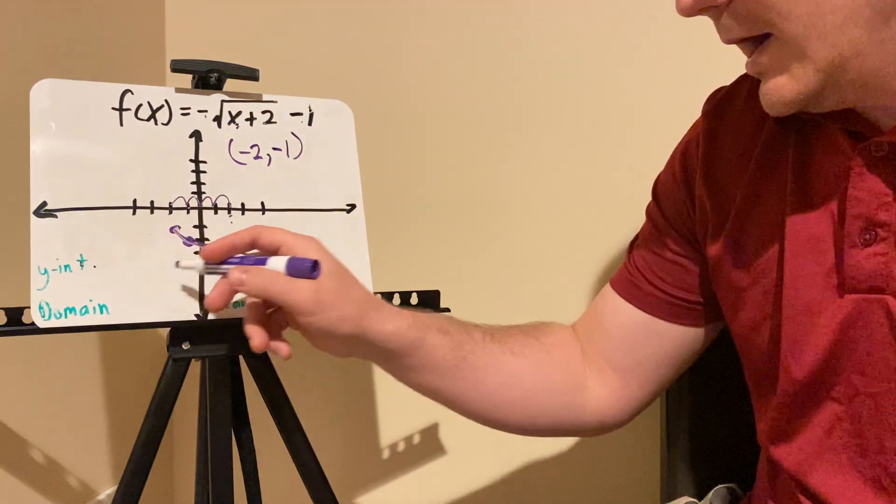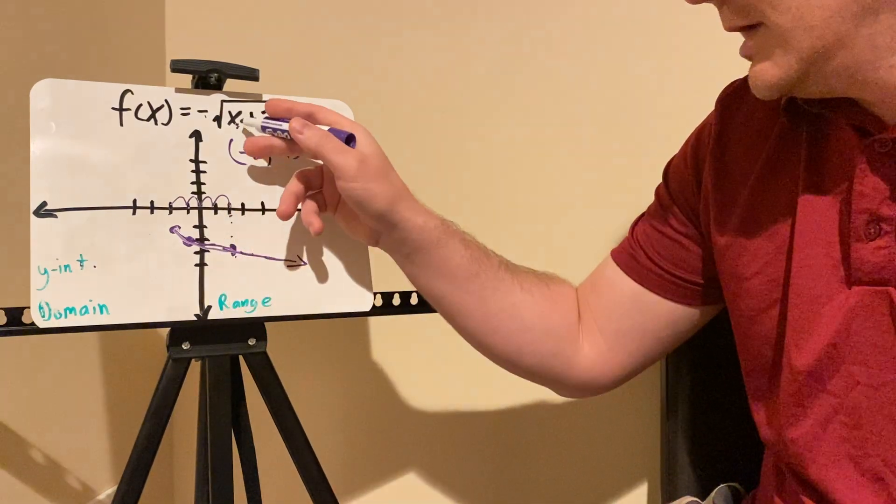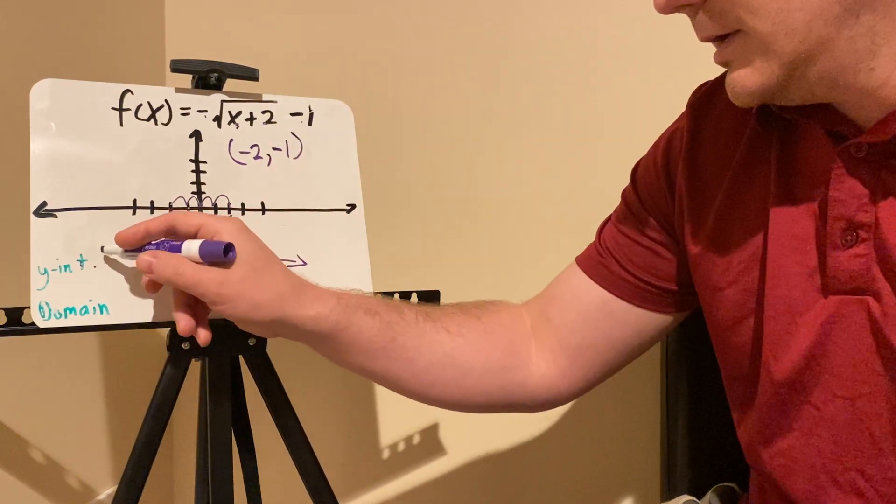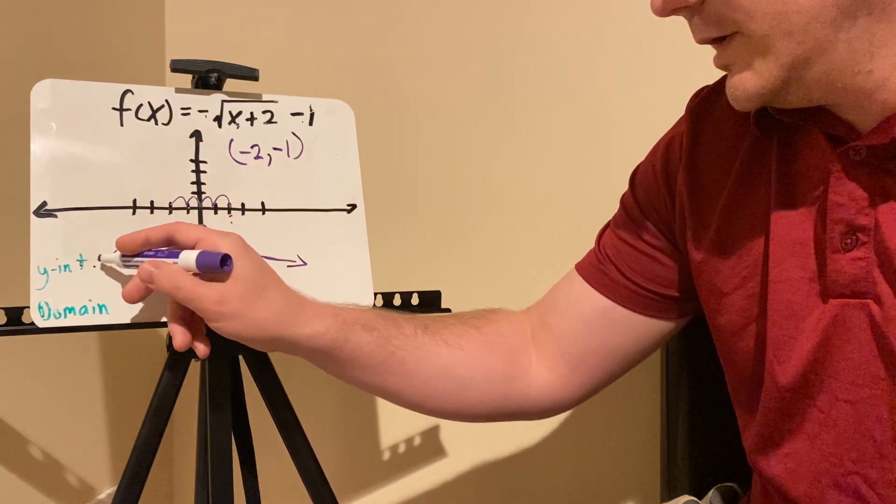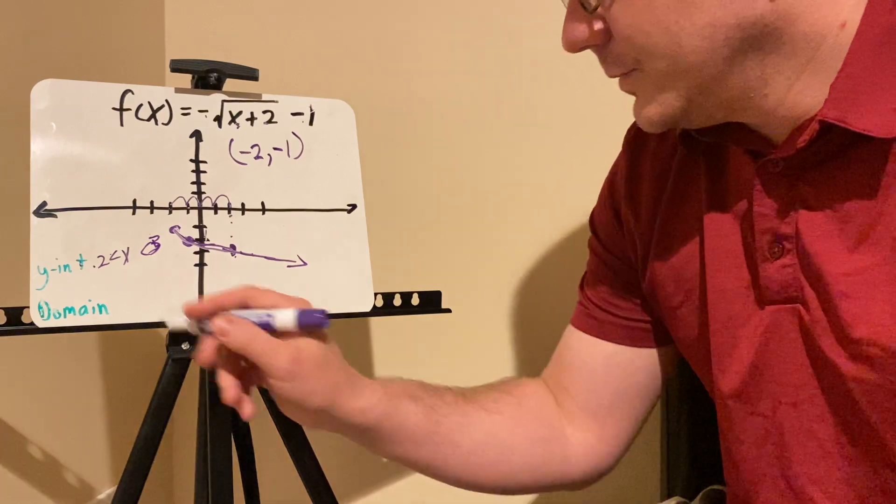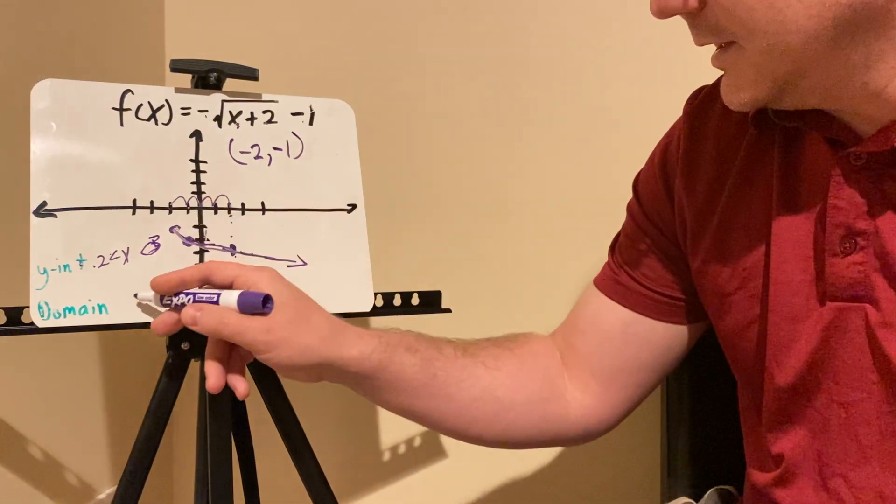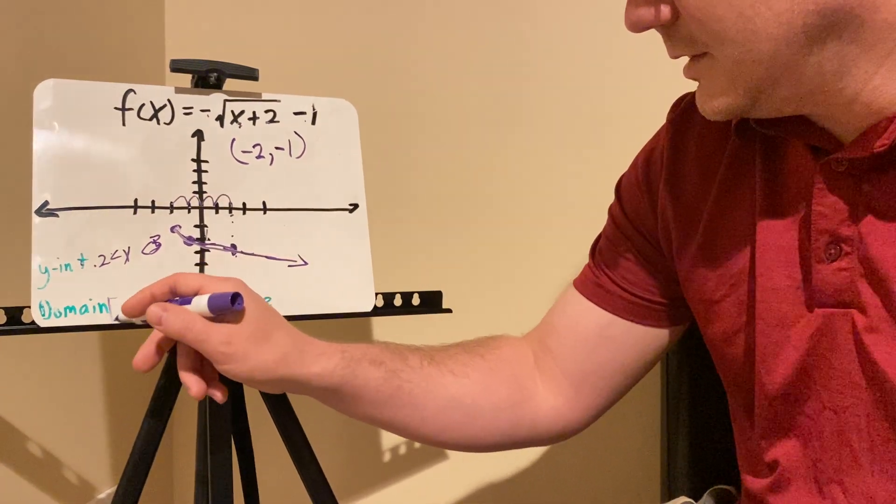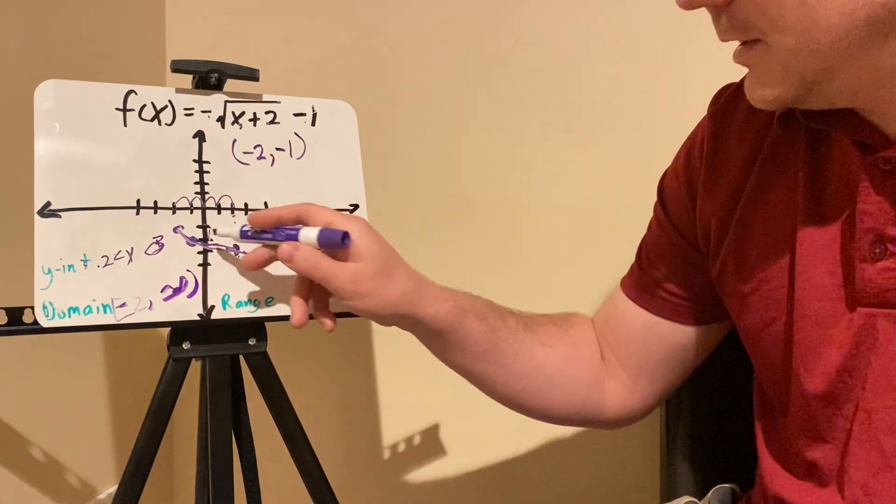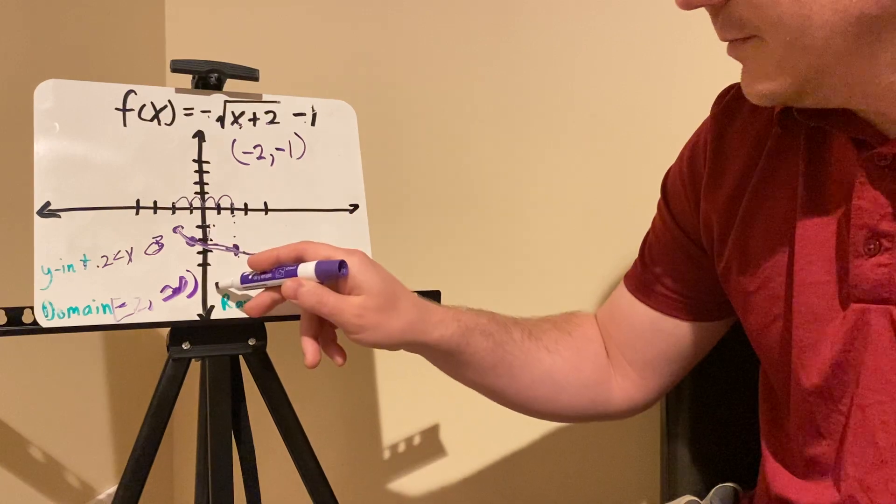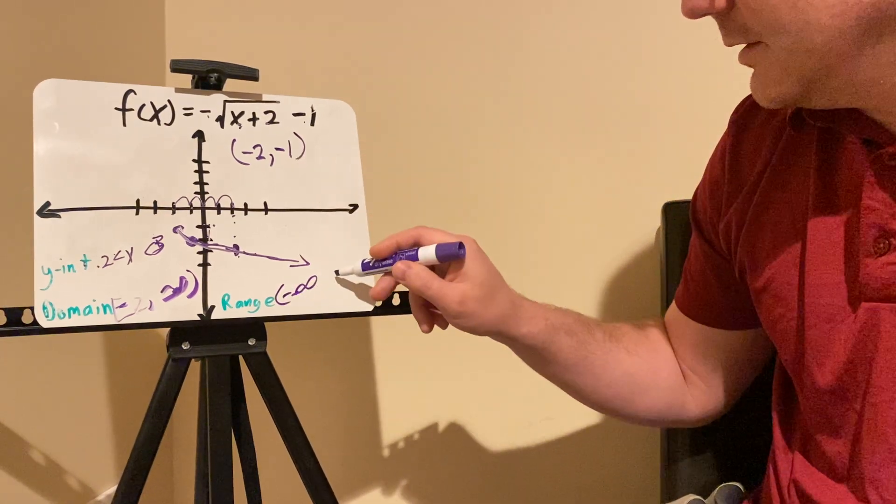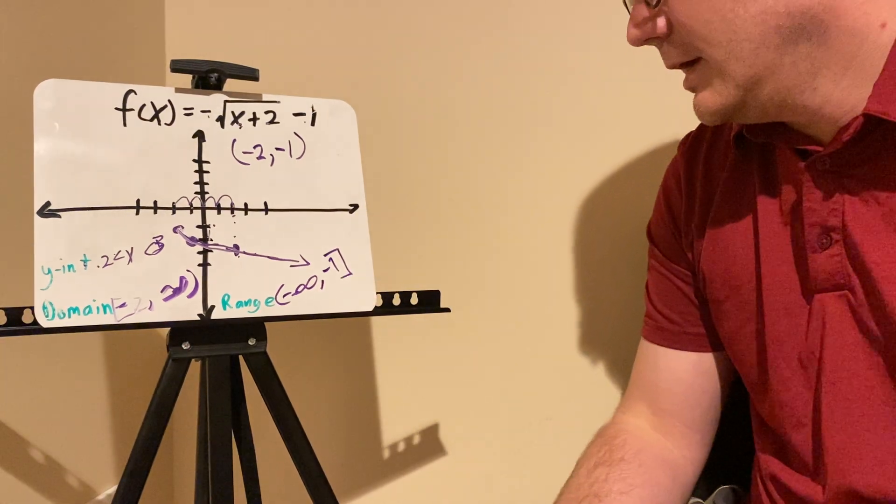Now, my y-intercept is going to be somewhere between 2 and 3. If x is 0, it's going to be the negative square root of 2 minus 1, which will be somewhere between 2 and 3. So that'll be somewhere in this range here. The domain is all my x values. So it'll be basically from negative 2, the initial x value, to positive infinity. And my y values for the range is going to be everything from negative 1 and below. So it'll actually be from negative infinity all the way up until negative 1 inclusive. And that would be my range.